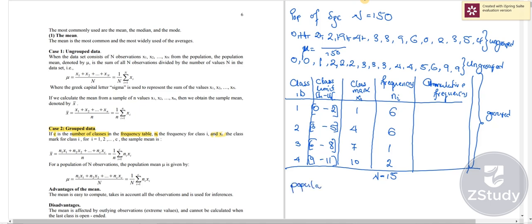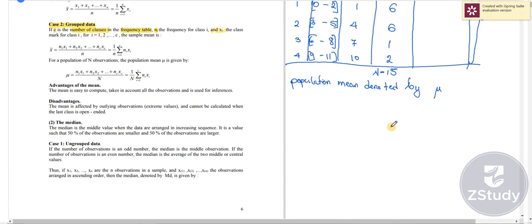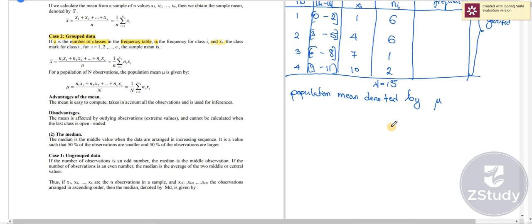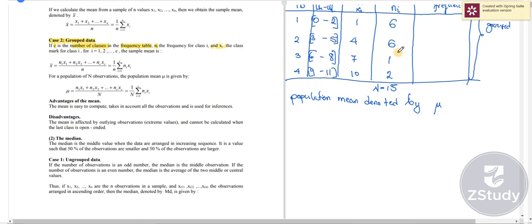And the population mean, as we know, denoted by the Greek letter mu, is given by a summation of all observations divided by the number of observations. But now that we have data that is grouped,